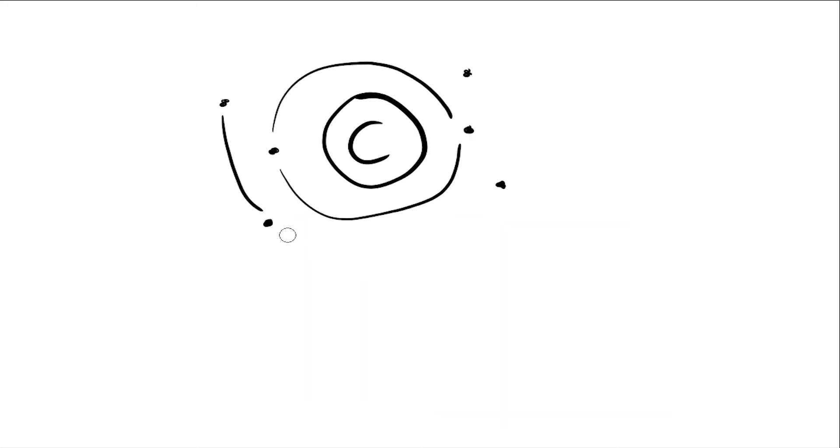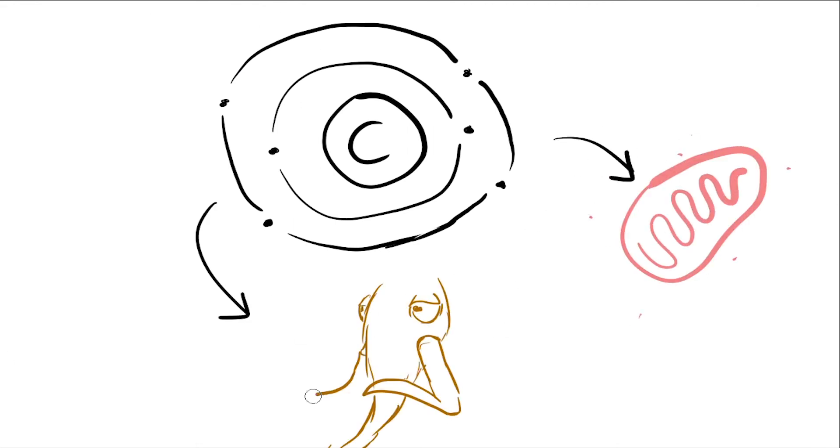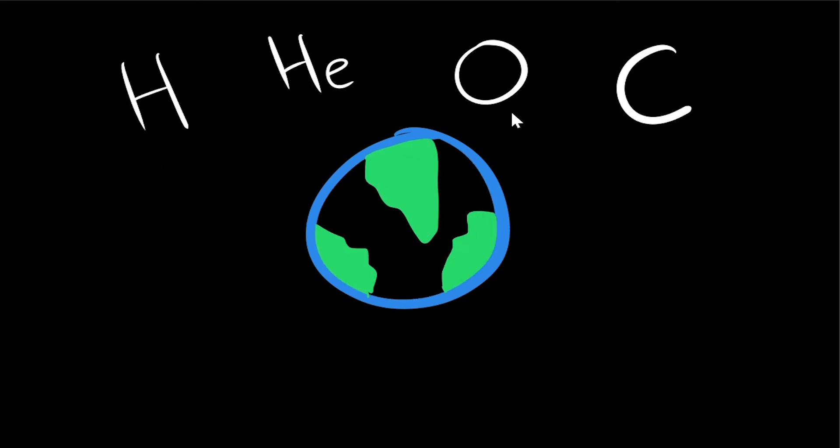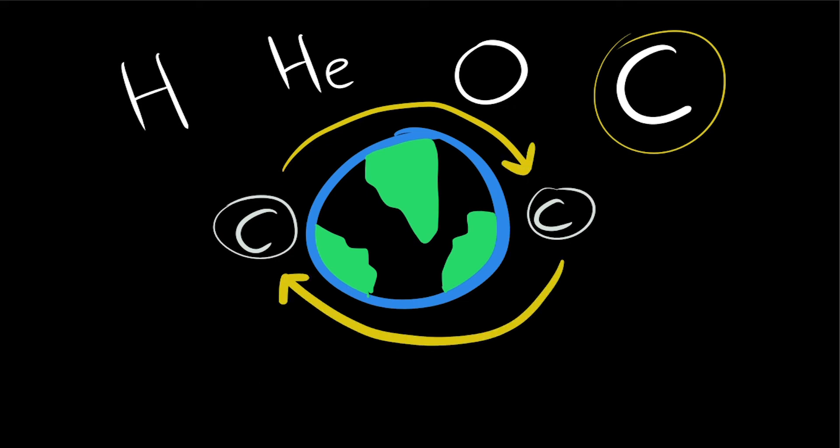Carbon is the fundamental building block of all life forms that have ever existed on Earth, from mitochondria to the woolly mammoth. It is one of the most abundant elements after hydrogen, helium, and oxygen. The carbon present during the formation of Earth 4.5 billion years ago is still cycling through the Earth today through a process called the carbon cycle.